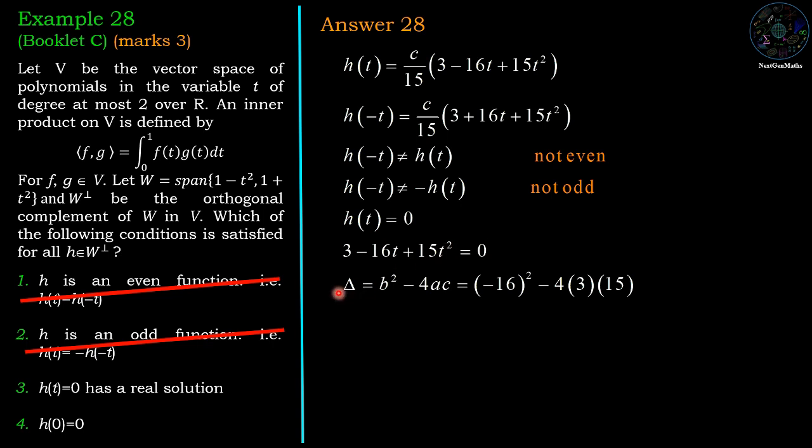Now it is a quadratic equation, so we have delta equals b squared minus 4ac. b equals minus 16, a equals 15, and c equals 3.